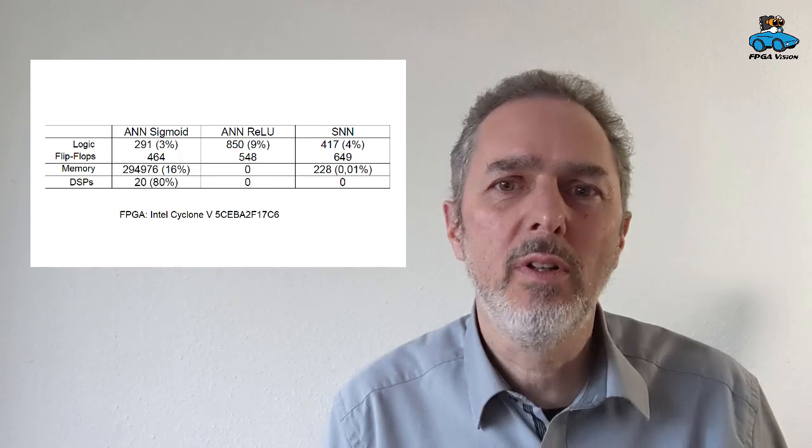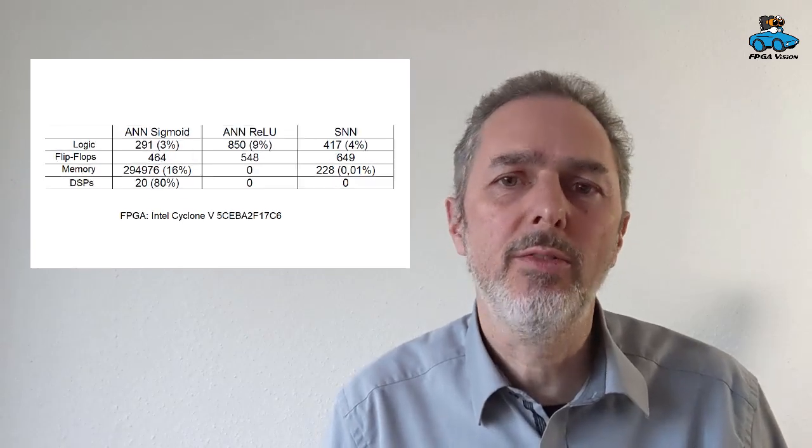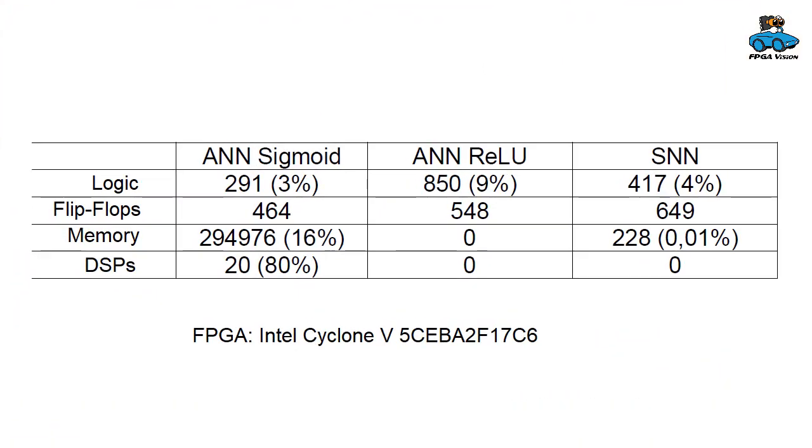And in this table, you see the required resources for the FPGA implementation. Again, for the three different implementations, old network, old network with ReLU and spiking neural network. The sigmoid activation function requires memory and DSPs, but the other two implementations are comparable. It must be noted that there is an overhead for visualizing the results. So for creating the output image that shows the yellow and blue color.